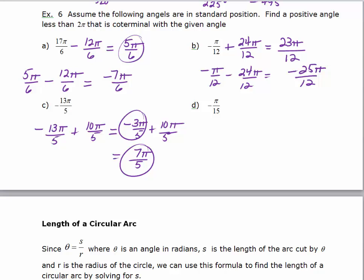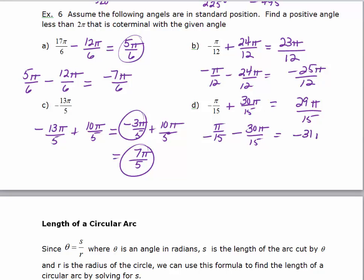For negative π/15, add 2π with a denominator of 15, which is 30π/15. So negative π/15 plus 30π/15 gives positive 29π/15 — the positive coterminal. For the negative coterminal, take negative π/15 and subtract 30π/15, giving negative 31π/15. Since 30π/15 equals 2π, you can confirm that 29π/15 is indeed less than 2π.